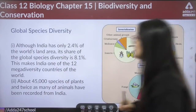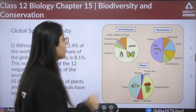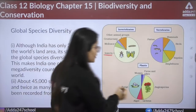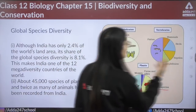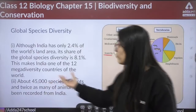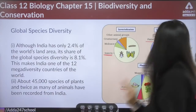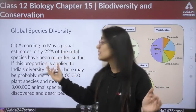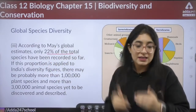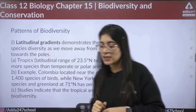When we see global species diversity in a pie chart, invertebrates including insects are highest, followed by plants, fungi, angiosperms, vertebrates, and fishes. About 45,000 species of plants and twice as many animals have been recorded from India, which accounts for about 22 percent of global species estimates.